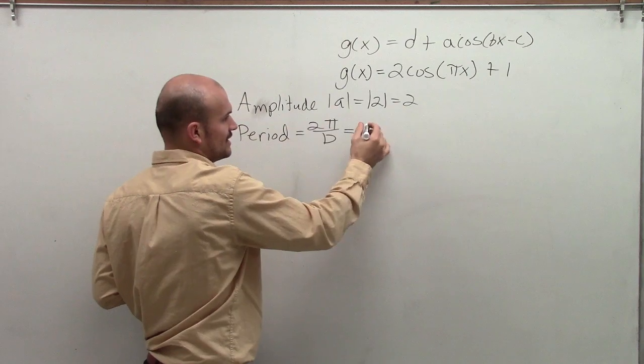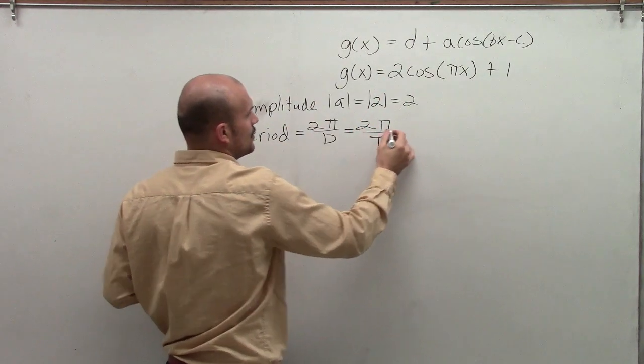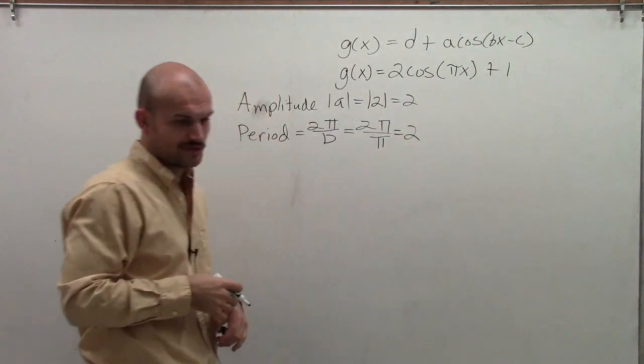So b is my pi. So I'm going to take 2 pi divided by pi, which leaves me with a period of 2.